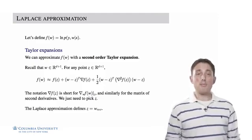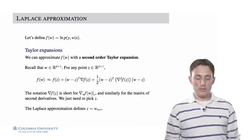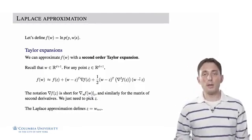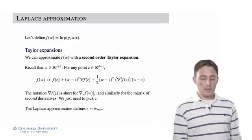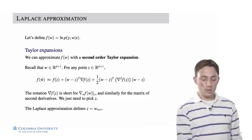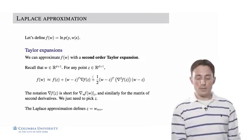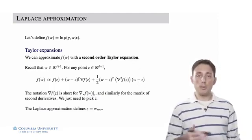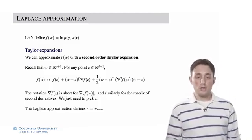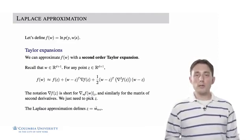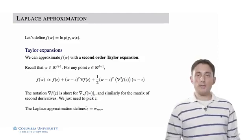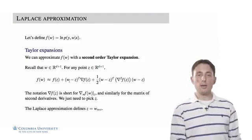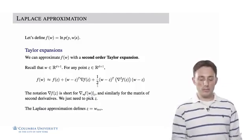On the right-hand side we have an approximation of the left-hand side. Both are functions of W, but the right-hand side also requires choosing a particular point Z. What the Laplace approximation does is pick Z to be the MAP solution. We find the MAP solution of the regularized logistic regression problem using gradient methods, define Z to be that MAP solution, and do a second-order Taylor expansion of the log joint likelihood about that MAP solution.